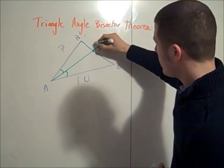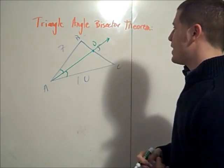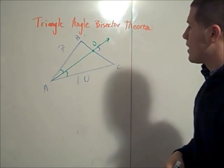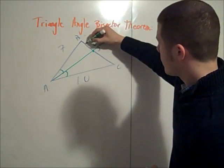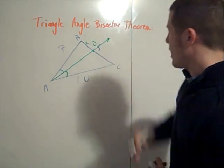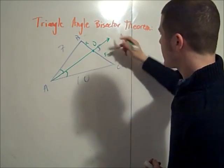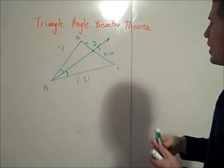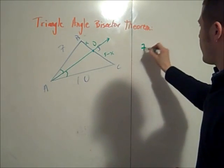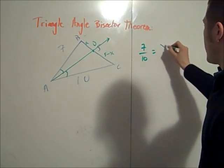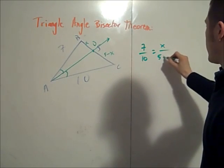So for instance, if this is the point D, we can find the length of BD and DC. Let's start by calling this length X, then DC is 5 minus X. And so I can write this proportion that 7 over 10 is X over 5 minus X.